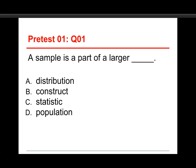First one: a sample is part of a larger — distribution, construct, statistic, or population? The answer is population. A population is the entire group of people. A sample is a part of that group that you actually got data from — essentially, if you have data, it's from a sample. A distribution is something you can create from variables, but a sample is not part of a distribution. A construct is an abstract thing you're measuring, but a sample is not part of that. And a statistic — you can have a statistic about a sample and a parameter about a population, but the sample is not part of a statistic. So the answer is D: a sample is part of a larger population.